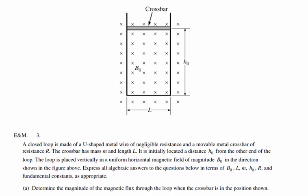In this problem, we have a magnetic field B₀ pointing in the direction shown in the figure. The magnetic field is shown by x's, which represent vectors going into the page. Dots would show the tips of arrows coming out towards you; x's show the tails of arrows going into the page. So we have a magnetic field that's into the page, and the bar is initially at position h₀.